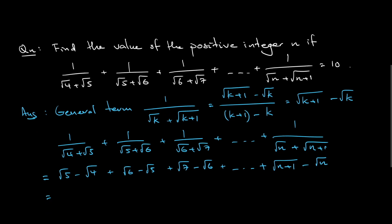Notice that in this sum, terms cancel each other out. What is left is the last positive term, square root of n plus 1, minus the first negative term, minus square root of 4. From the question, that expression equals 10, so square root of n plus 1 minus square root of 4 equals 10.